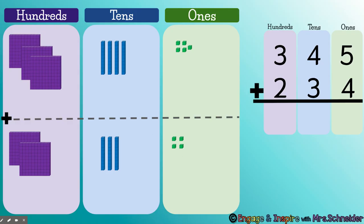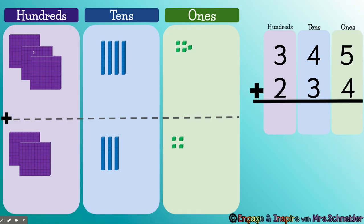We're going to find out using our algorithm what the answer is. But we already know we can just add all of our base 10 blocks. So we know that the answer is going to be 1, 2, 3, 4, 500, and 10, 20, 30, 40, 50, 60, 70 — 500 and 70 — then 1, 2, 3, 4, 5, 6, 7, 8, 9 — 579.